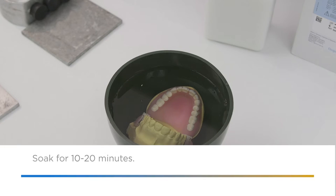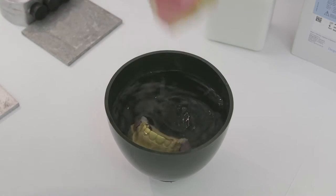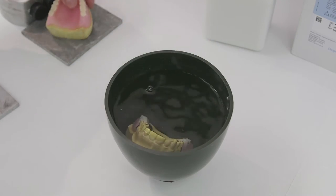Next, soak the denture wax up on the stone cast to hydrate the model to prevent porosity. Soak for 10 to 20 minutes prior to pouring the mold material.